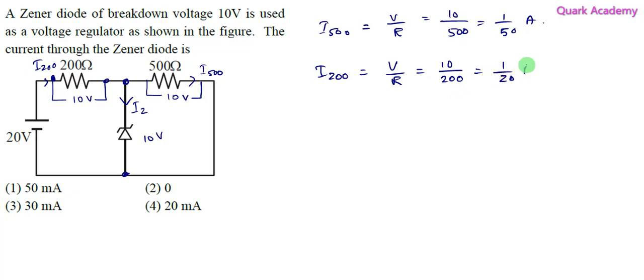Now if we see the current directions, here we have I200. From here, some portion will go to the zener diode as Iez, and the remaining portion will go to 500 ohm as I500. If we apply Kirchhoff's junction rule or Kirchhoff's current law, then we can write that the incoming current towards the junction will be equal to the sum of outgoing currents. So I200 will be equal to I500 plus Iez.